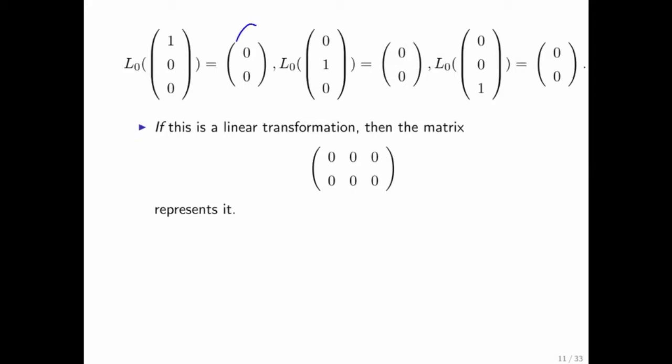Well, we know that these vectors right here become the first, second, and third column of the matrix that might represent this particular vector function. So now the only thing we need to do is see whether this matrix, which only has zeros as its entries, indeed represents that vector function.